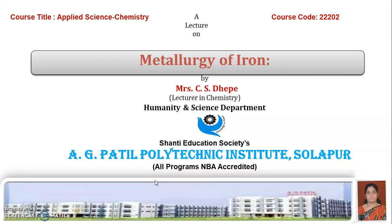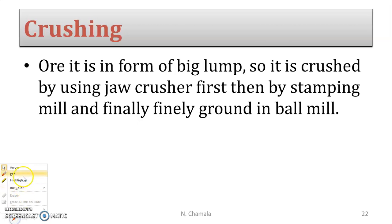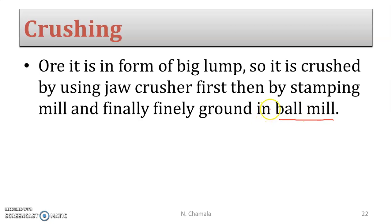In the first part of this video we saw the flowchart of various steps involved in metallurgy. Now we are going to study the stepwise details. The first step is crushing — the ore comes in the form of big lumps, so it is first crushed using a jaw crusher, then by a stamping mill, and finally finely ground in a ball mill to produce a fine pulverized powder.